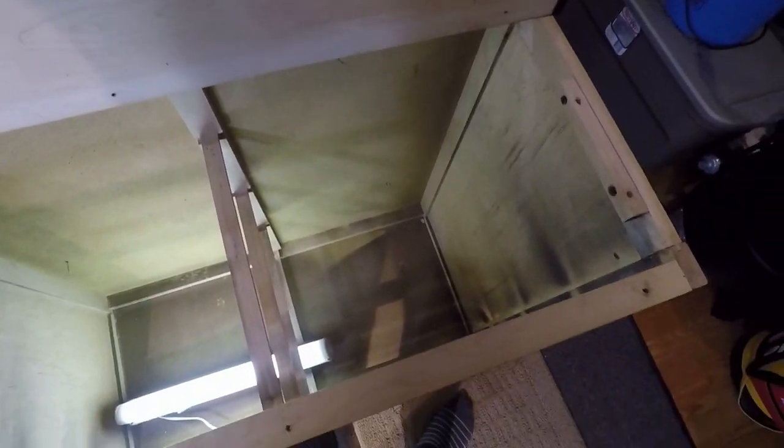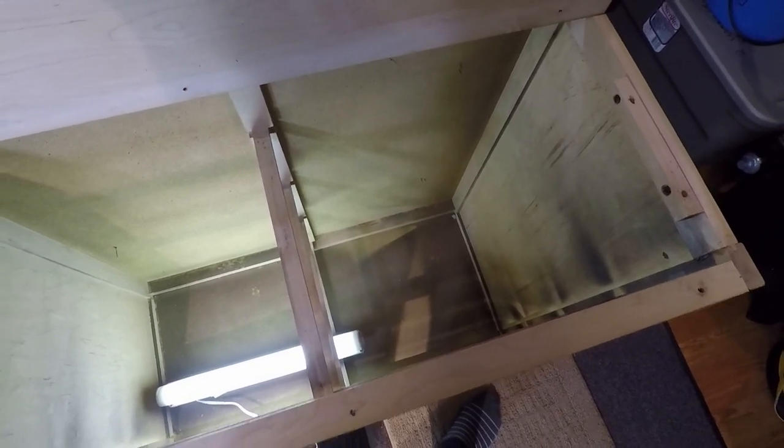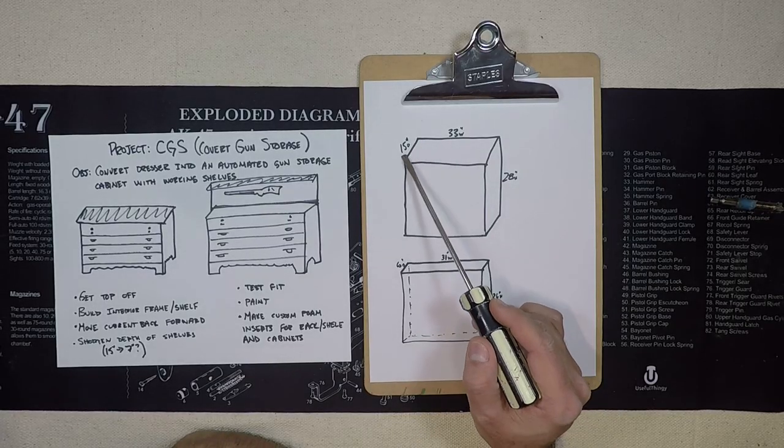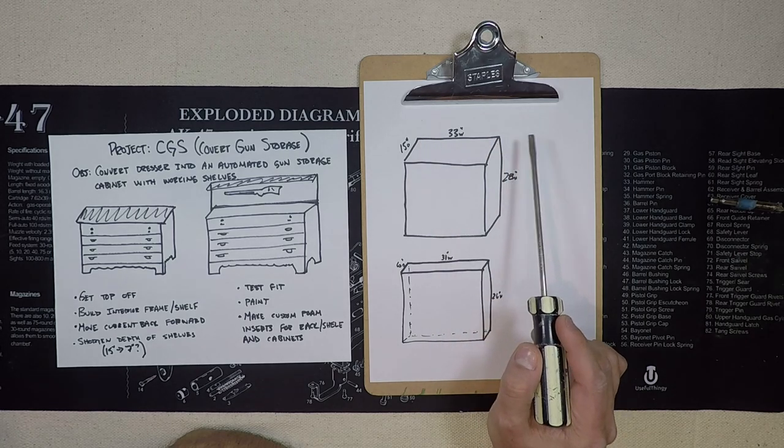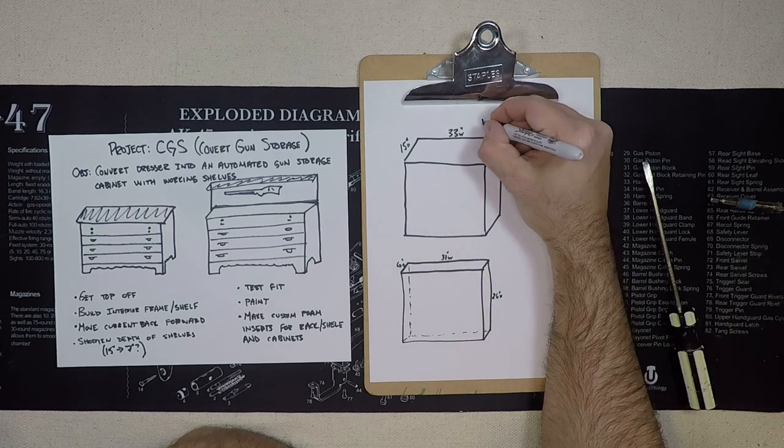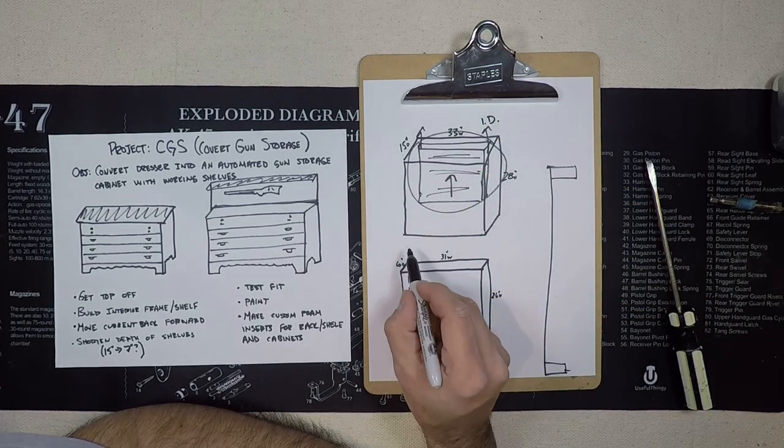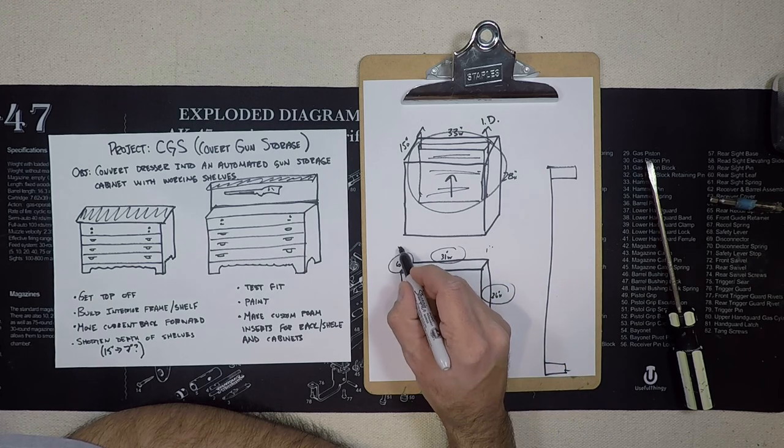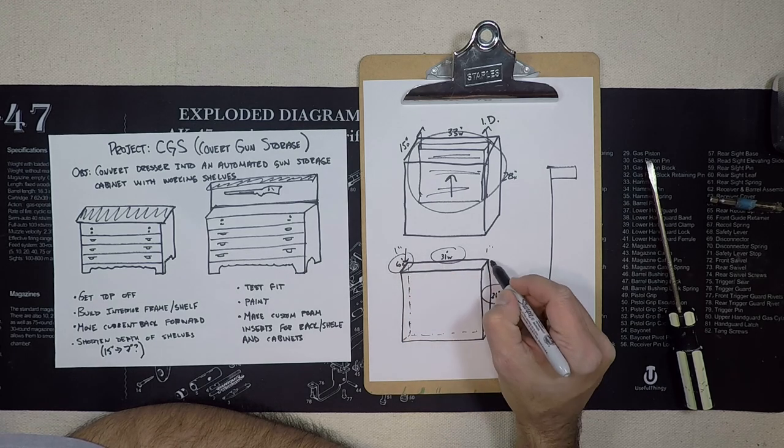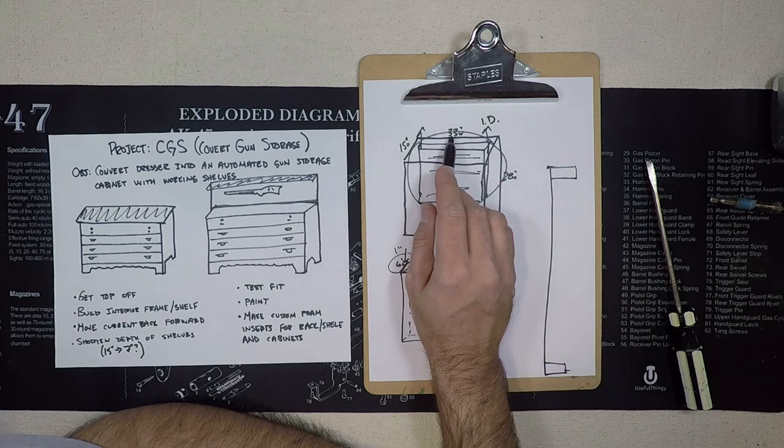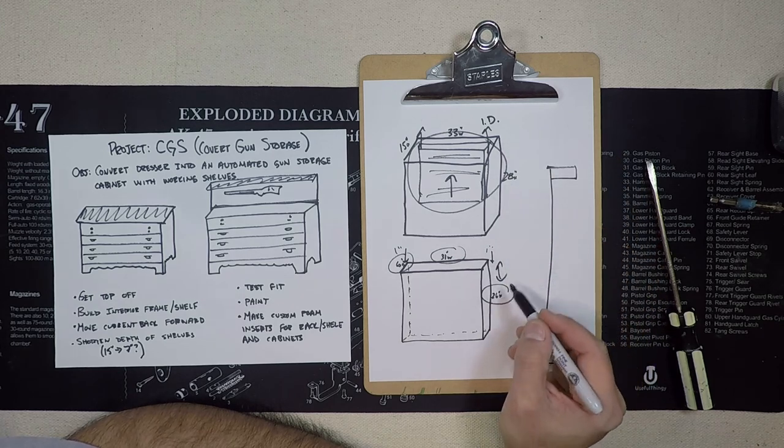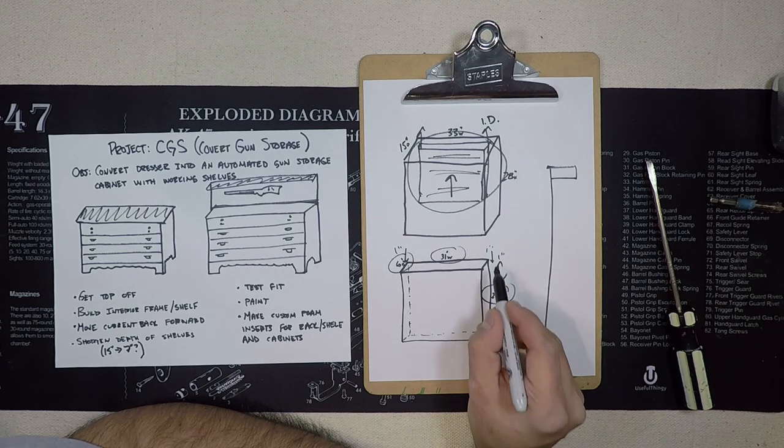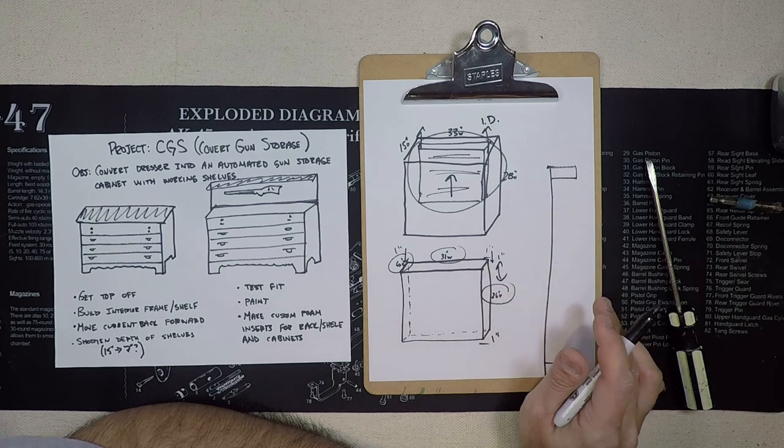Our dimensions here were 15 inches deep, 33 inches wide, and 28 inches high. These are all internal dimensions. So our internal shelf we're going to make 6 inches deep, 31 inches wide, and 26 inches high. This will give us 1 inch of room on either side to allow for up and down movement, and 1 inch at the bottom. That should give us some wiggle room.